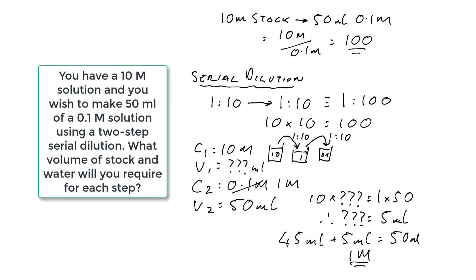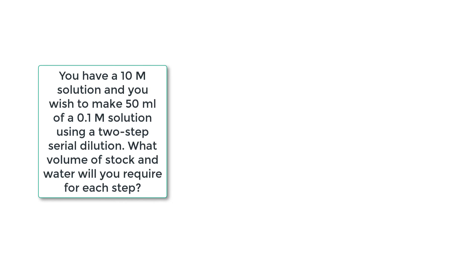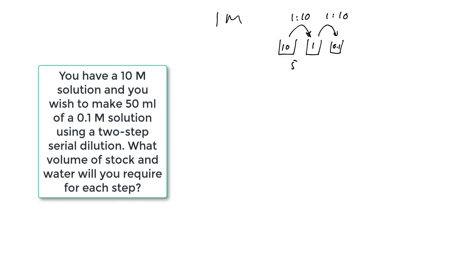We now need to move on to the second step. Our stock solution is now effectively 1 molar because we've done that one-in-10 dilution, and we need to take it to 0.1 molar. Thinking back to our three beakers: 10 molar in the first, 1 molar in the second, and 0.1 molar in the third. We're now doing that second one-in-10 dilution, taking 5 mils of the 1 molar solution and adding 45 mils of water to give us 50 mils of the 0.1 molar solution.